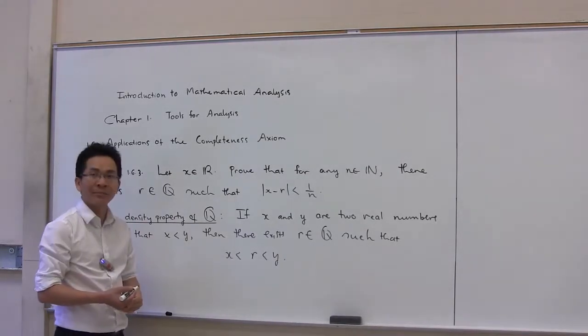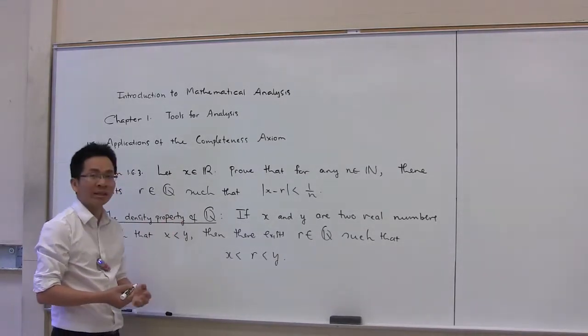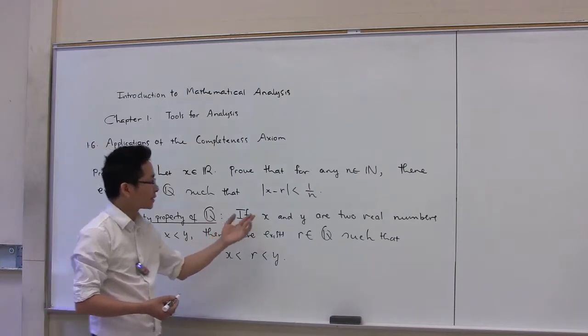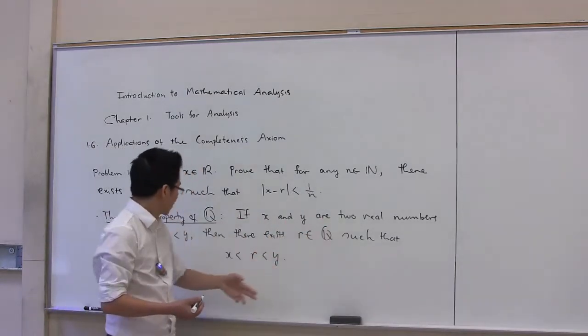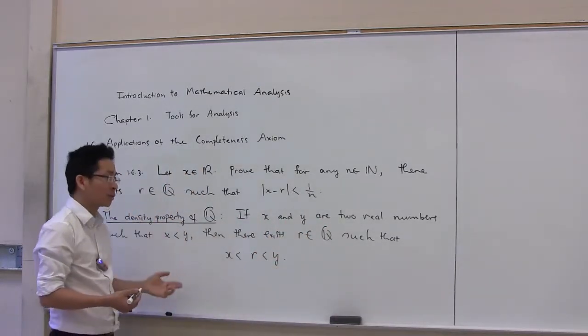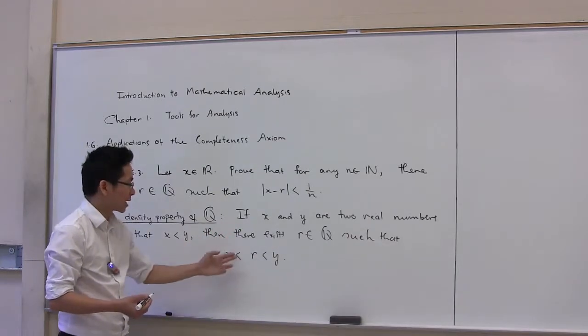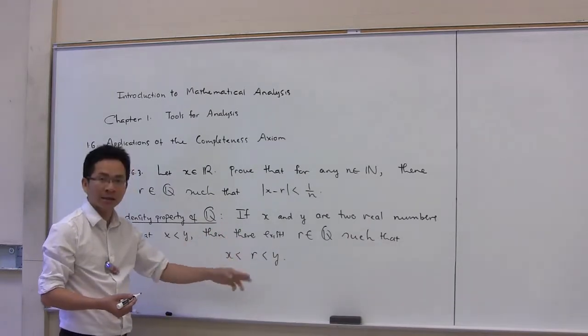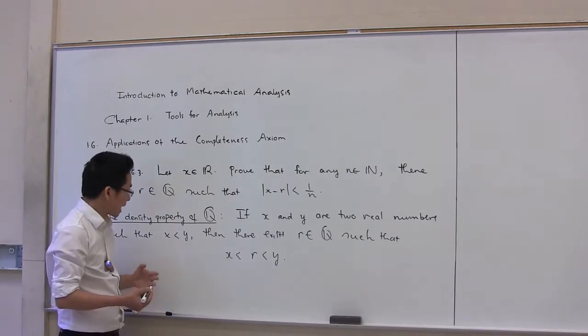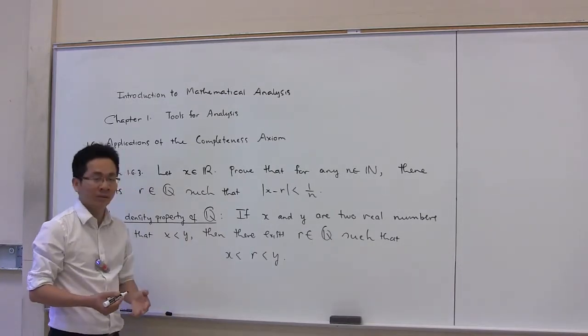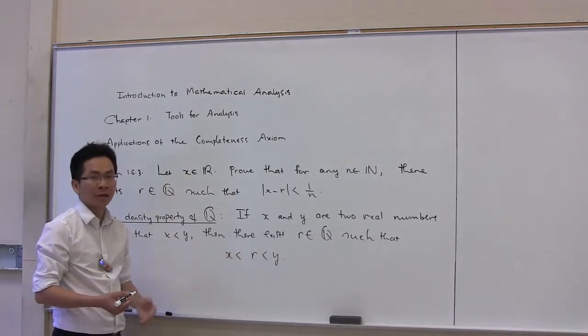Before solving the problem, let me recall the density property of Q. If x and y are two real numbers such that x is less than y, then there exists a rational number r such that r is greater than x and is less than y. That means in between two real numbers, there exists a rational number.